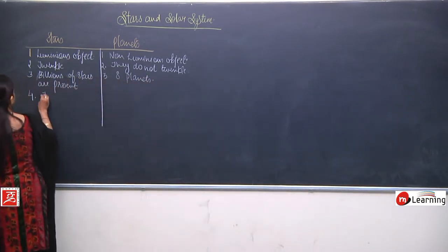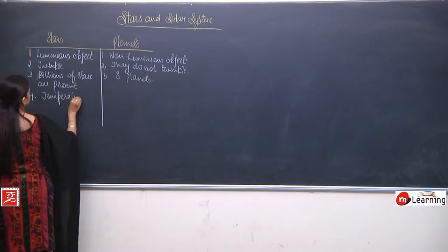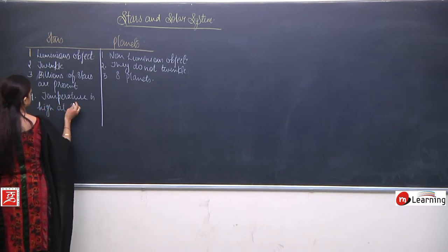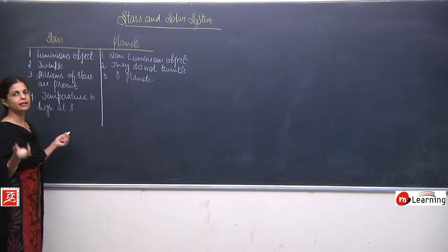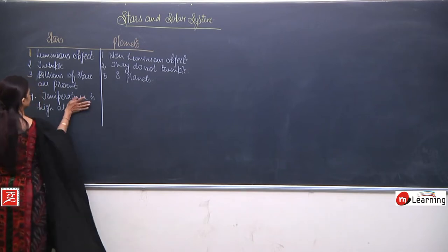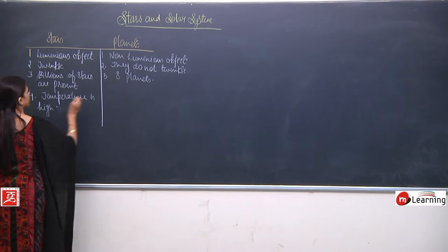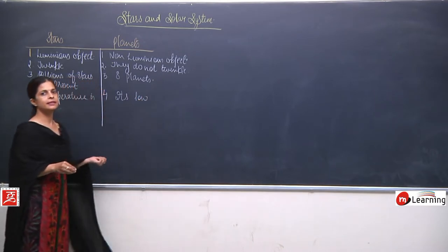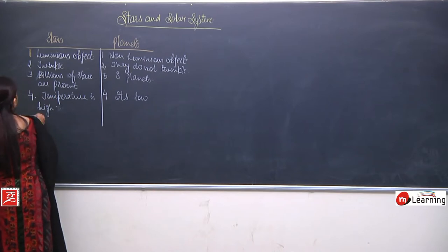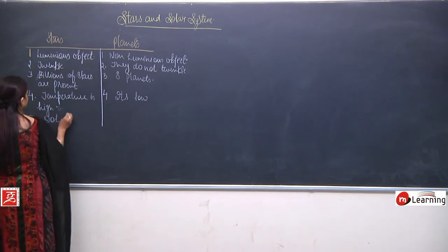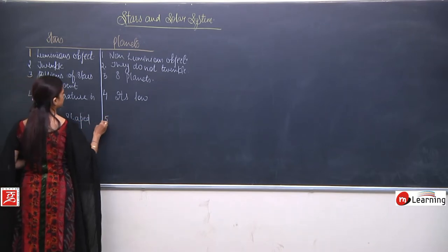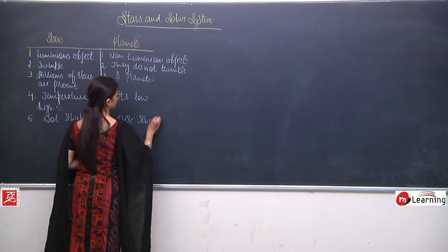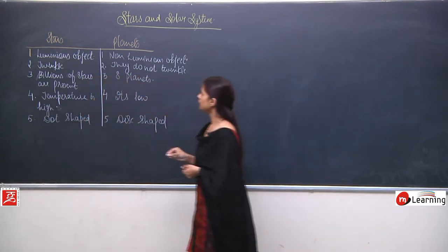The temperature is very high at the surface of the star, whereas the temperature at the planets is low. The stars are dot-shaped, but the planets are disc-shaped.